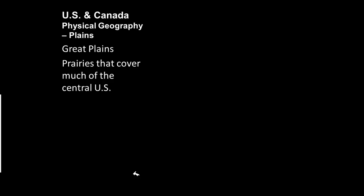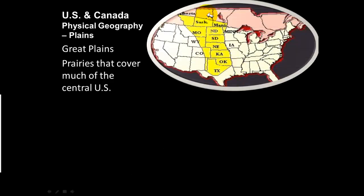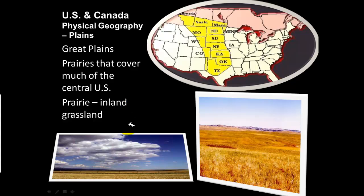The Great Plains are a prairie region — a flat grassland — covering much of the central United States, from Canada through Montana, North Dakota, South Dakota, Wyoming, Nebraska, Kansas, Oklahoma, Texas, and Colorado. If you've driven through or flown over this area, it's just miles and miles of flat land. The technical definition of a prairie is inland grassland — flat land with grass as far as the eye can see.